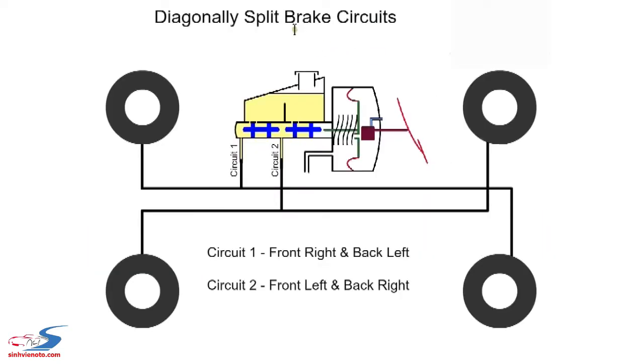With diagonally split brakes, two circuits are used. Circuit 1, front right and back left. Circuit 2, front left and back right. If a leak occurs on one circuit, the car can still be stopped with the other circuit.